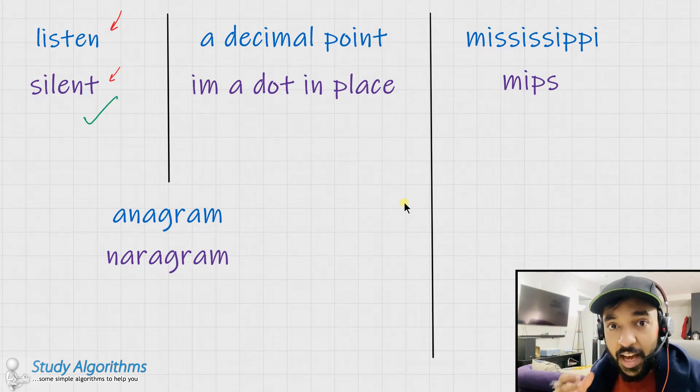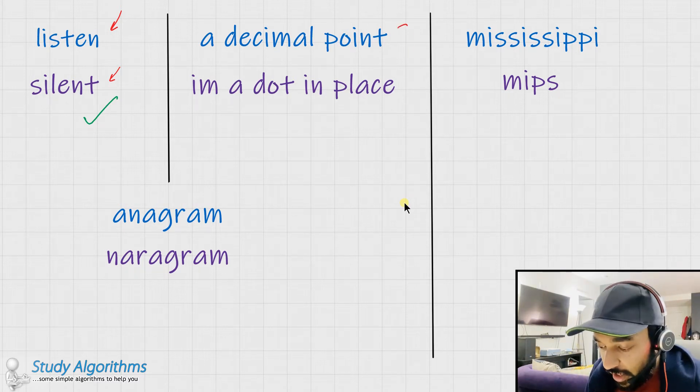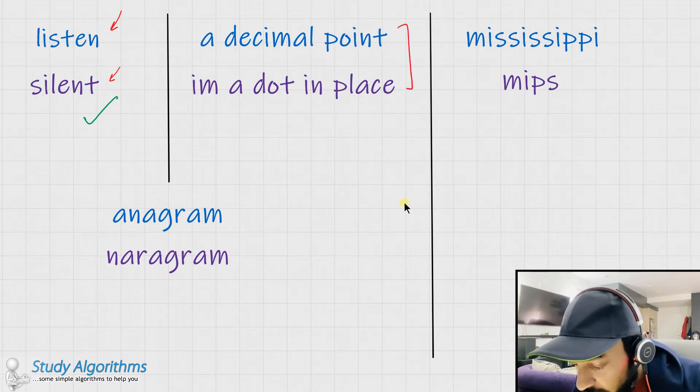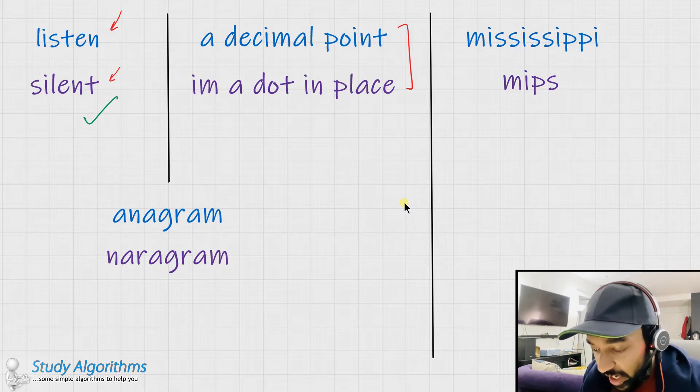It is not necessary that an anagram should be a word. You can also have a phrase. We can see this in example number two. Our first phrase is a decimal point and our second phrase is I am a dot in place. If you see, both these strings have the same characters throughout. And hence, this is also an anagram.